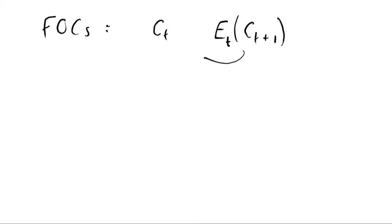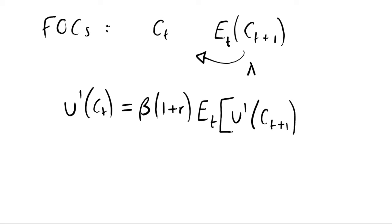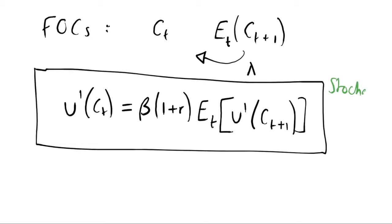So once we do that and substitute this into our first-order condition for Ct, using setting this equal to lambda and substituting it in, rearranging, we will get out this condition which looks very similar to our original Euler equation but now we have some expectations in it, which makes it the stochastic Euler equation. Which says that marginal utility of consumption in period t is equal to the discount rate multiplied by the interest rate multiplied by the expectation of marginal utility of consumption in period t plus 1. So this that we have here is our stochastic Euler equation.